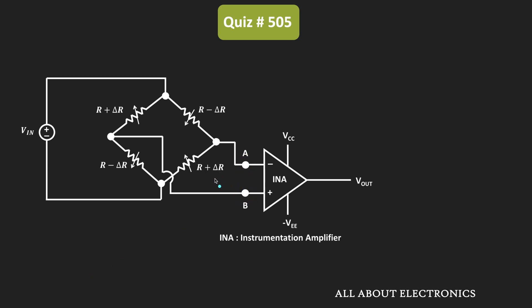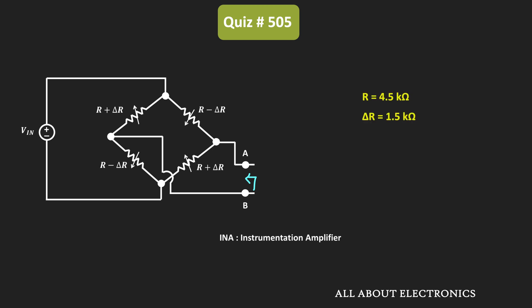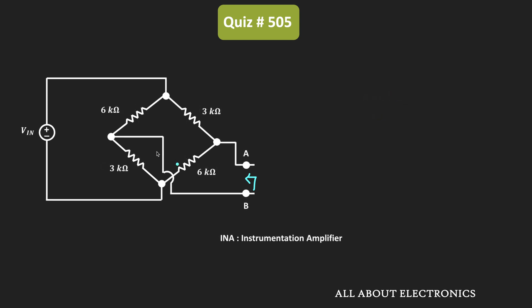To find the equivalent resistance between these two terminals, first of all let us remove the instrumentation amplifier from the given circuit. We have R equal to 4.5 kilo ohm and Δr equal to 1.5 kilo ohm, which means these two resistors will become 6 kilo ohm while the other two resistors will be equal to 3 kilo ohm.